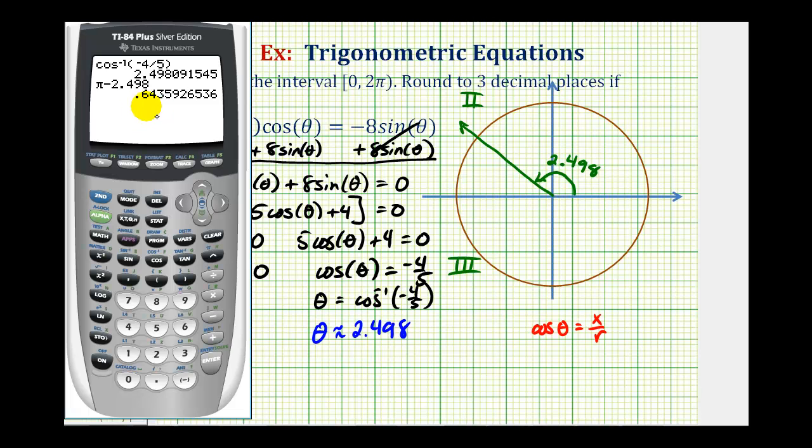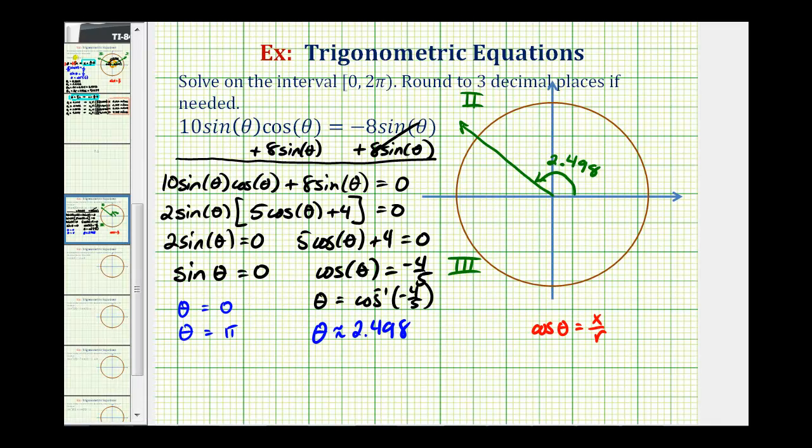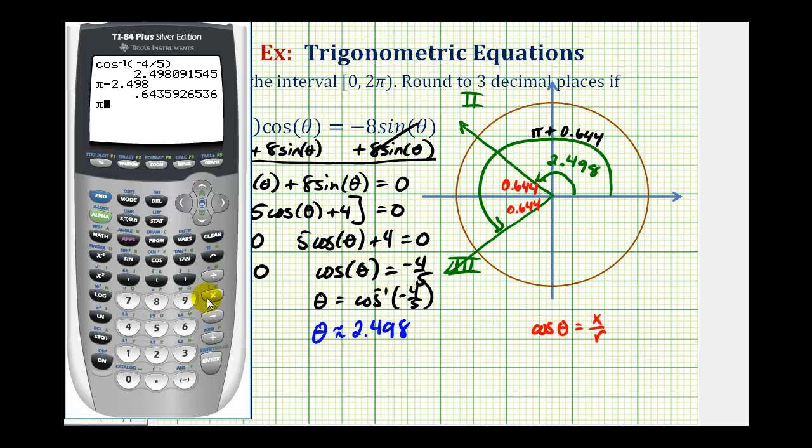So now we'll sketch the same reference angle in the third quadrant to find our other solution. So our second solution would be this angle here, which would be pi radians plus the reference angle of 0.644. So our solution in the third quadrant is approximately 3.786 radians.